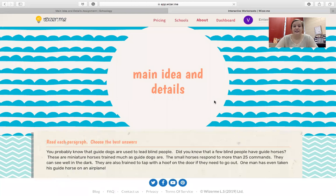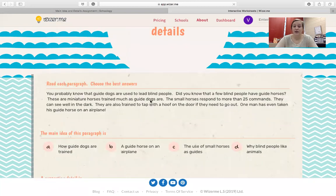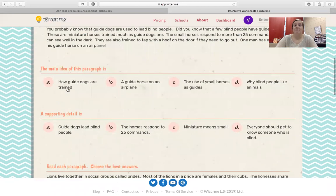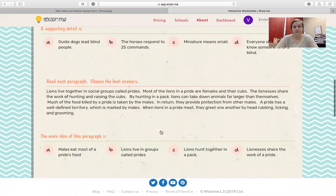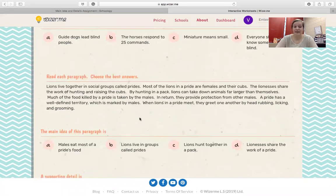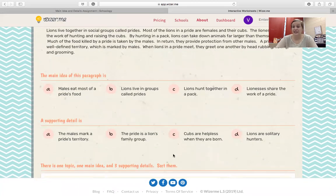So once it loads, you will see main idea and details at the top. You have one paragraph to read and then you're going to pick the main idea of the paragraph and a supporting detail. You don't have to pick multiple, just one. Then you're going to read another paragraph, pick the main idea and a supporting detail.